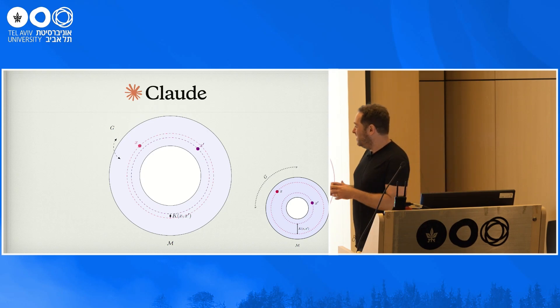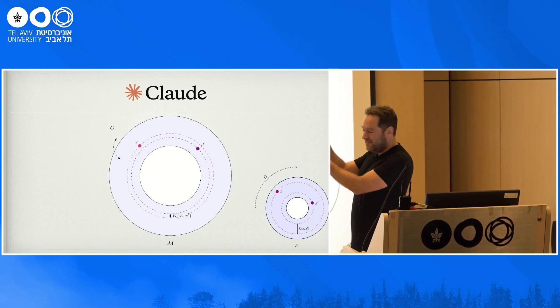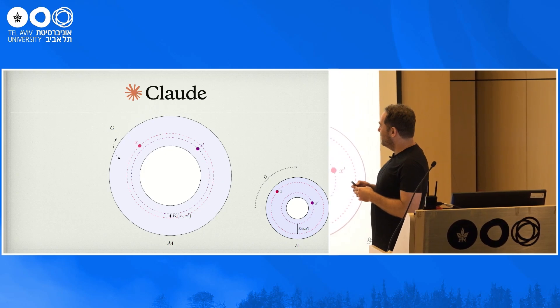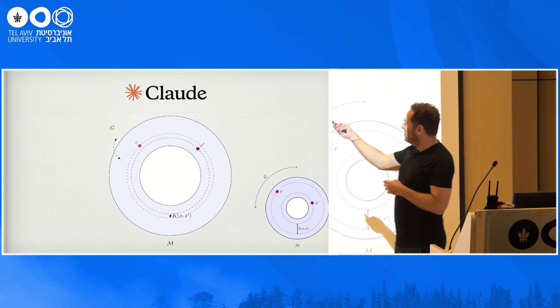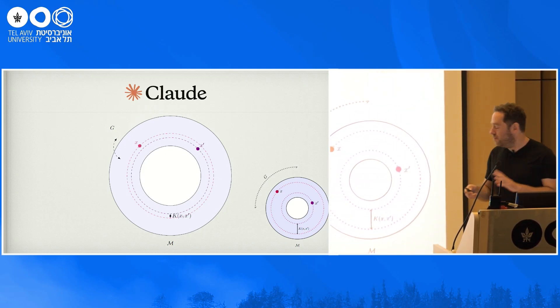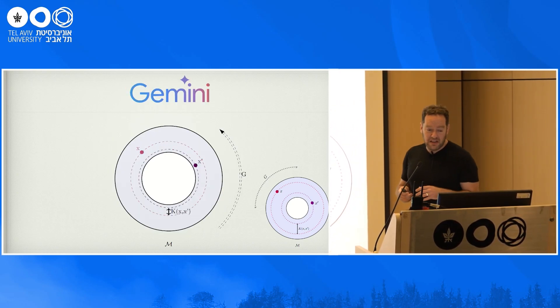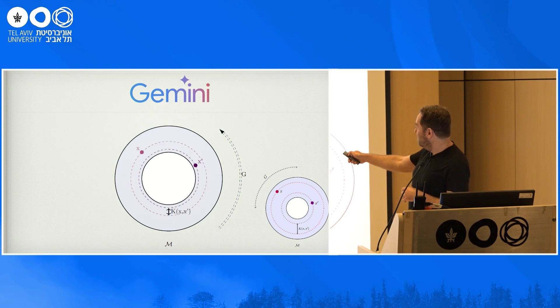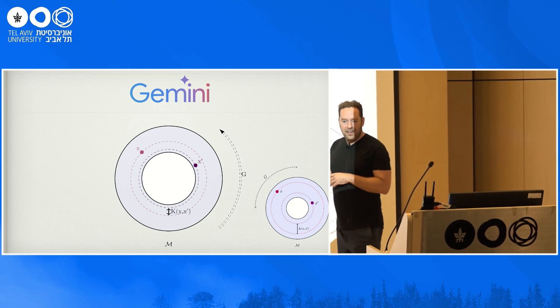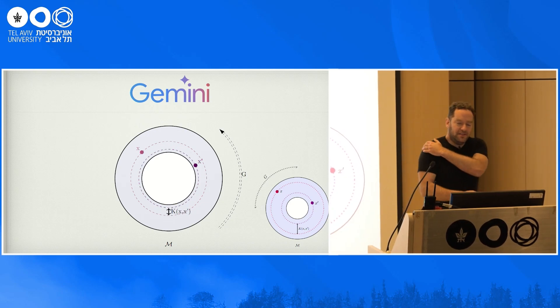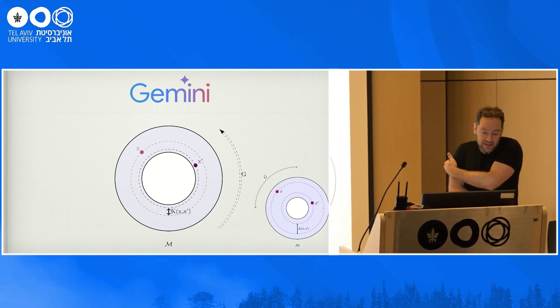Claude produces almost a good result. You can see kind of the aesthetics are very strange. It makes these dashed circles very close and somehow the G on the outside is incorrectly placed. But also you could work with that and you could fix it. Gemini hallucinates that I want the line to have this weird pattern that I didn't ask and also it's on the wrong side. But other than that, I would say all of these results are not bad at all.